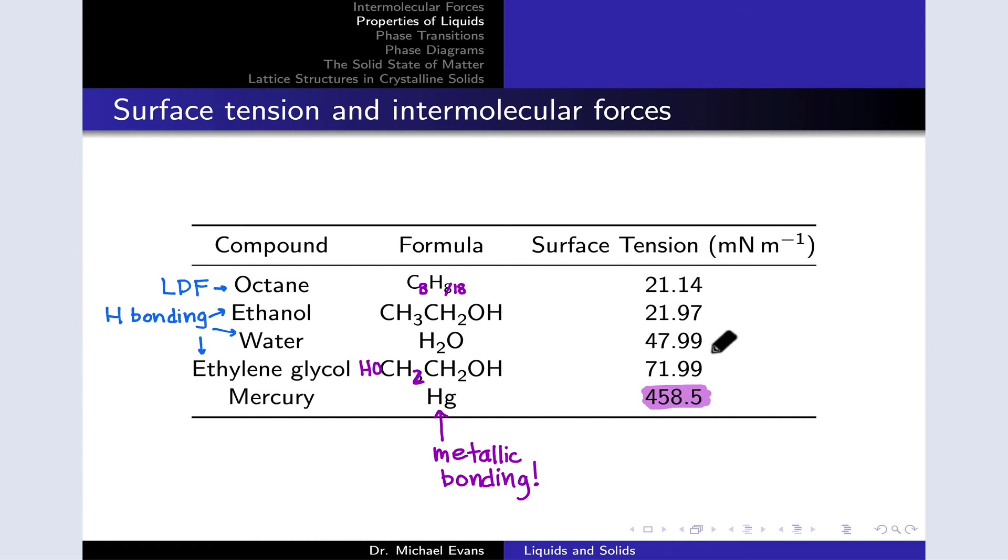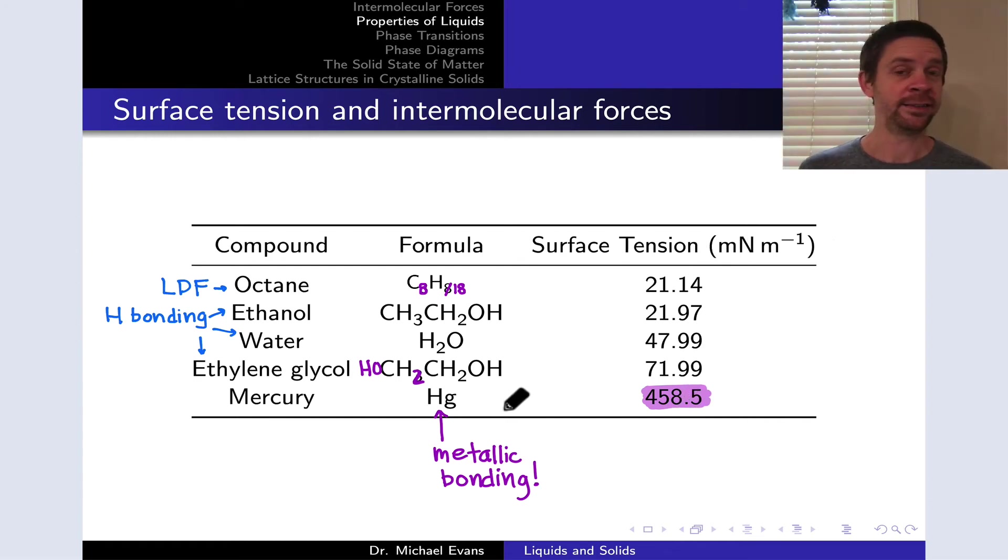Mercury is on a whole other level in terms of surface tension, way, way higher than all of the others in terms of force per length. The reason is that the intermolecular forces, quote unquote, in mercury are really metallic bonds between the mercury atoms. They're really not intermolecular forces at all; they're bonds to some extent.